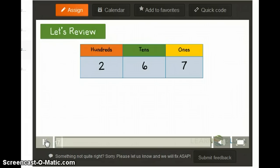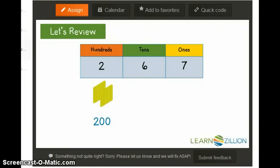First, let's review place value by looking at a place value chart. Here we have the number 267. The two is in the hundreds and represents 200, not just two. The six is in the tens and has a value of 60, and the seven shows seven ones.